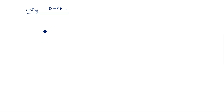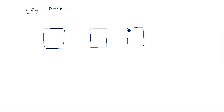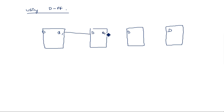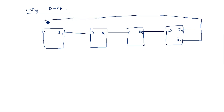Now let us see the logic diagram using D flip-flops. For a 4-bit Johnson counter we use 4 flip-flops: D, Q1 output is given to D of Q2, Q2 to D of Q3, Q3 to D of Q4. Instead of taking Q4, the Q4 bar is given as input to the first flip-flop. This is the change from the ring counter to the Johnson counter, and the clock signal is common to all.